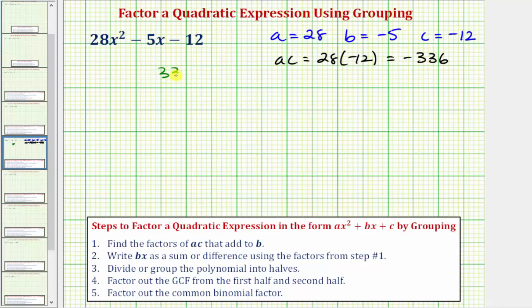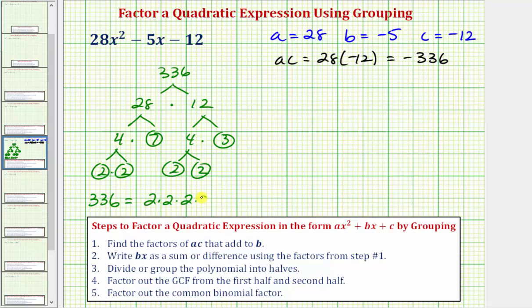So we know that 336 is equal to 28 times 12. 28 is equal to four times seven. Seven is prime. 12 is equal to four times three. Three is prime. And of course, four is equal to two times two, both of which are prime. So the prime factorization of positive 336 would have four factors of two, one factor of three, and one factor of seven.